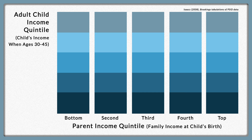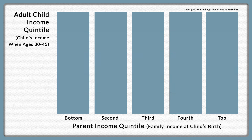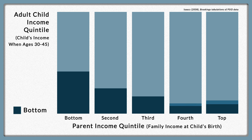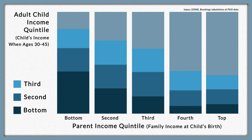In reality, the graph looks like this. There is mobility, but most people stay near their family's position in the distribution. This is especially true for the richest families and for the poorest, because just as wealth can be inherited, so can poverty.